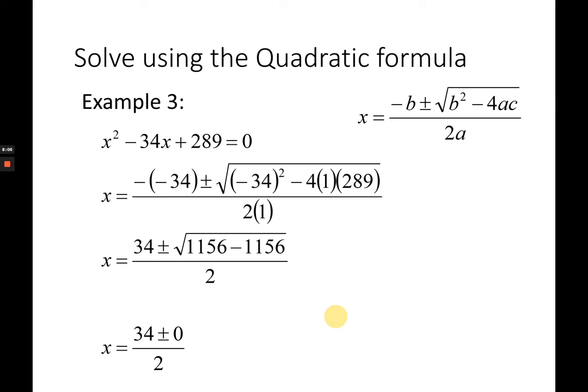If it's negative, there's two complex roots. Therefore, there's only one root. And that will be 34 divided by 2. And it's actually 17. And that's the solution.